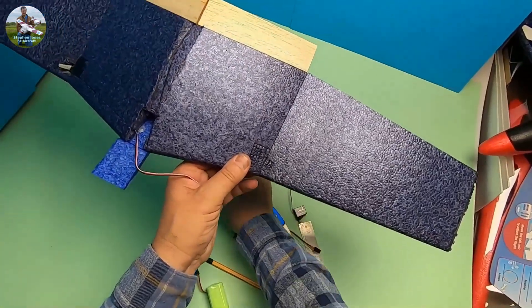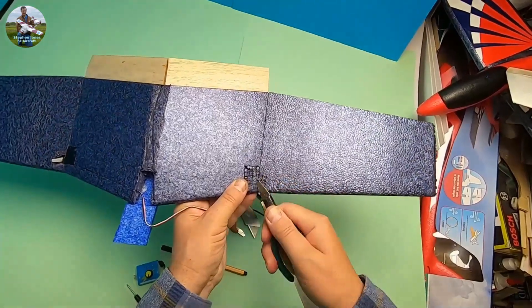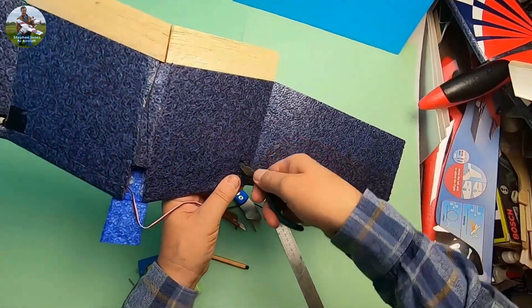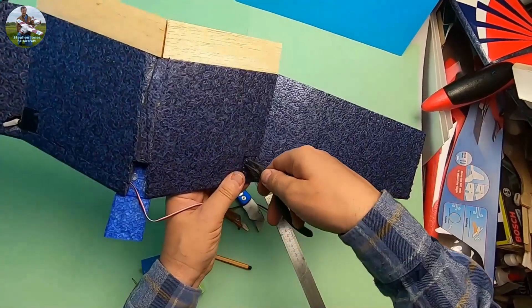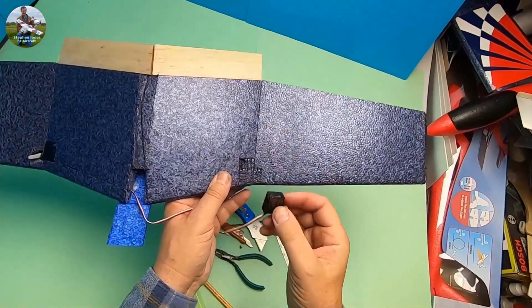Now the messy part. Just get a pair of pliers. Don't go too deep and just pull little cubes out. You don't want to go too deep, just deep enough for the servo to go in.